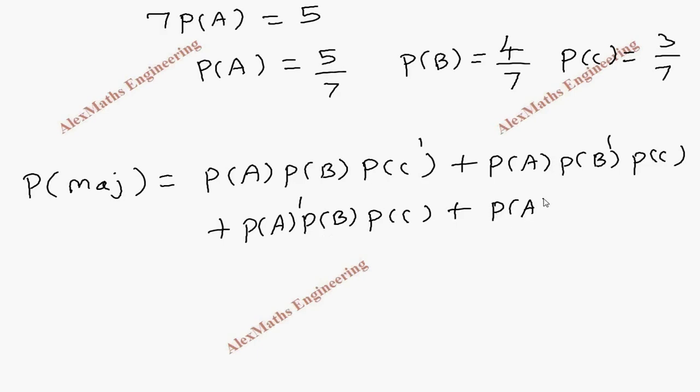Here all the three are favoring: P(A) P(B) P(C). So this means majority—out of three, two are favoring or three are favoring. So we're going to substitute the values.